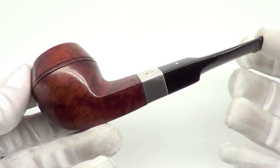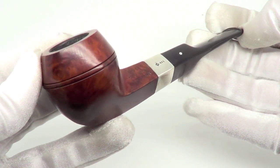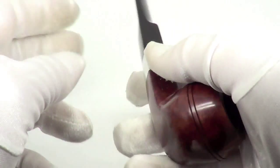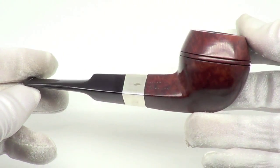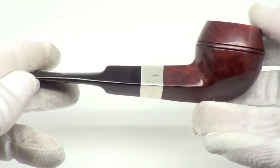Here is a beautiful Dunhill pipe. This is a Dunhill root briar pipe and it is from 1978.